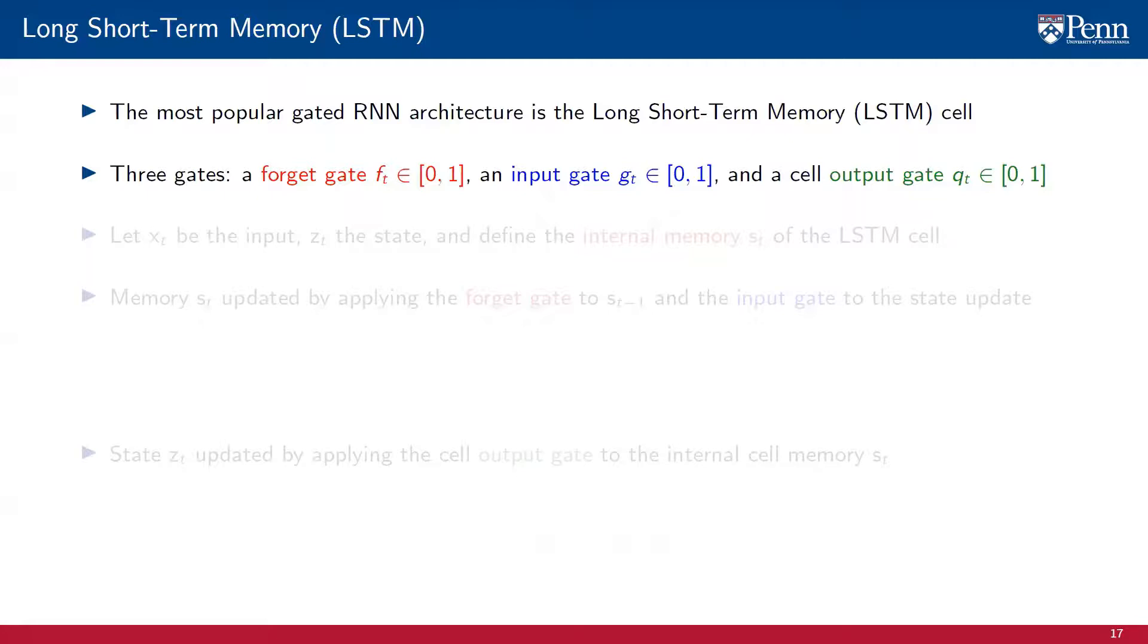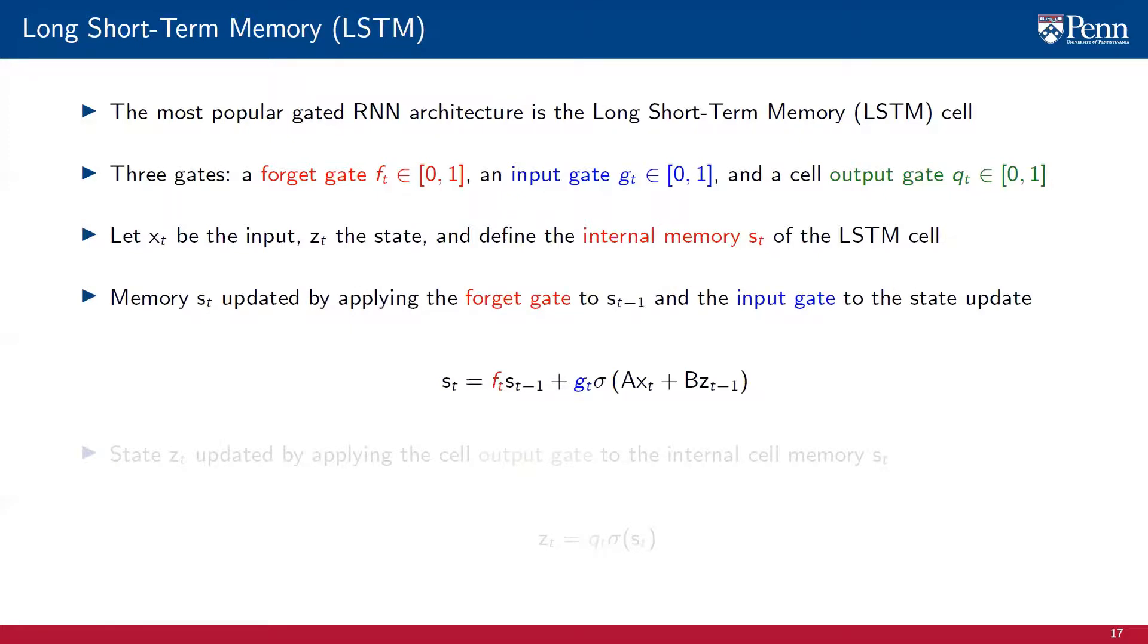The self-loop of an LSTM cell is defined in terms of three gates: a forget gate unit f, an input gate unit g, and a cell output gate q. Let then x be the input of the LSTM cell, z the hidden state of the overall recurrent neural network, and s the internal memory of the LSTM cell. That internal memory s is updated by applying the forget gate f to the previous value of the internal memory s, and by applying the input gate g to the state update of the RNN, which, as we recall, is given by a nonlinearity sigma on top of a linear combination of the input x and the previous value of the hidden state z.